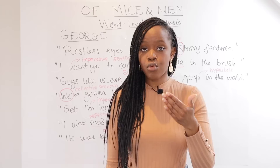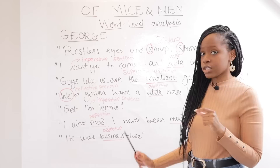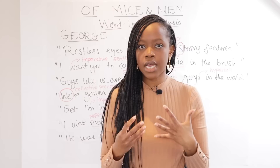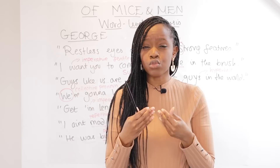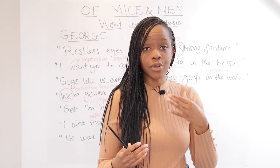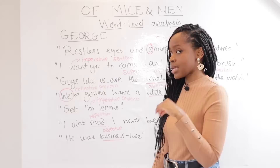When George finds Lenny before the other men do — after Lenny has killed Curley's wife — Lenny says he must be really angry. George responds: 'I ain't mad. I never been mad.' The word-level analysis is the repetition of 'mad,' used twice, which shows George's paternalistic, fatherly attitude toward Lenny — almost telling him he still loves him like a son. This is heart-wrenching because George, out of love, realizes he must kill Lenny, showing him before doing so that he was never truly angry with him.